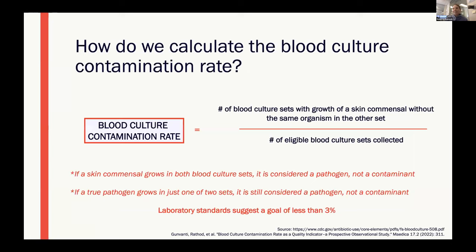The blood culture contamination rate is calculated by taking the number of blood culture sets with growth of a skin commensal without the same organism growing in the other set, then dividing that by the number of blood culture sets collected during that same period. If a skin commensal grows in both blood culture sets, we consider it a pathogen and it's not a contaminant. If a true pathogen grows in only one of the two sets, it's still considered a pathogen. Laboratory standards suggest a goal of less than 3% for the blood culture contamination rate.